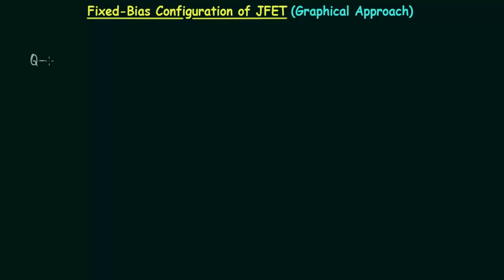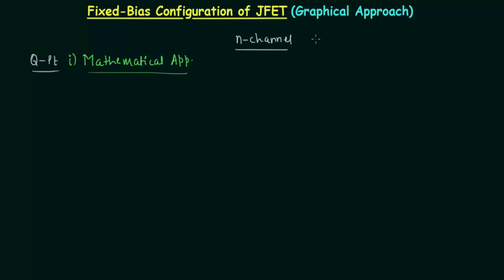In the last lecture we obtained the operating point of an n-channel JFET with fixed bias configuration using the mathematical approach. We already know there are two approaches: the first is the mathematical approach and the second is the graphical approach. In this presentation we will follow the graphical approach to obtain the same operating point, and for this we need Shockley's equation.